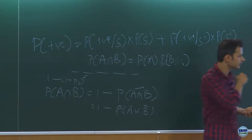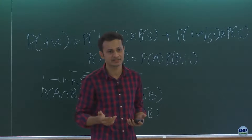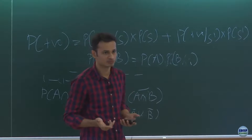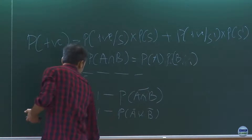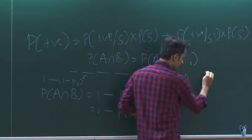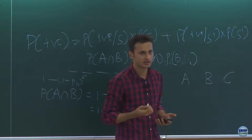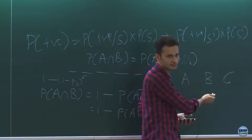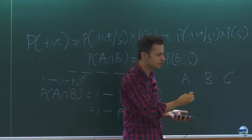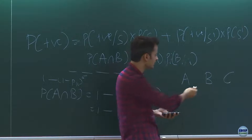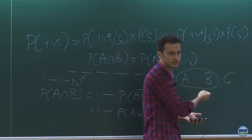Another concept is conditional independence. X and Y may or may not be independent, but given some condition Z they can be independent. For example, A and B both reaching the office — right now it looks independent, but if there is a third event C (a traffic jam), given the traffic jam, if A has reached late, the probability of B reaching late also increases. But given no traffic jam, A reaching late and B reaching late become independent. So given some condition, events can become independent.